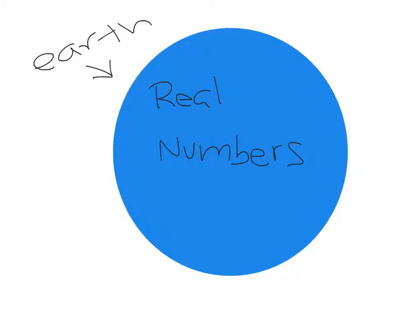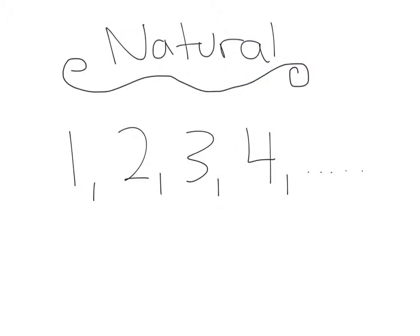So on Earth, they started out with one species. That species was called natural numbers. Those numbers were 1, 2, 3, 4, and so on.